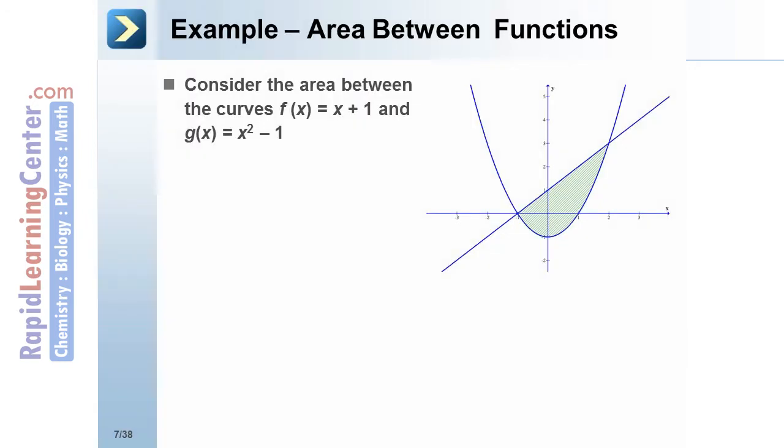Example: Consider the area between the curves f(x) = x + 1 and g(x) = x² - 1. In the graph, we can see that x + 1 is the top curve and x² - 1 is the bottom curve.